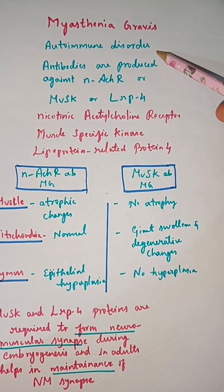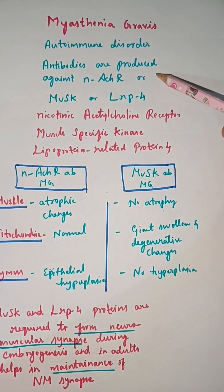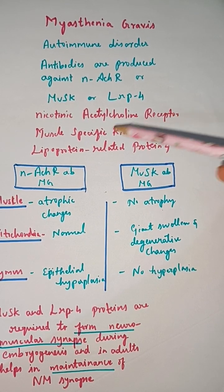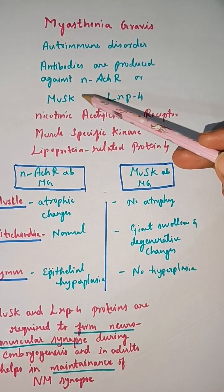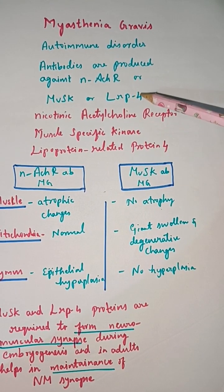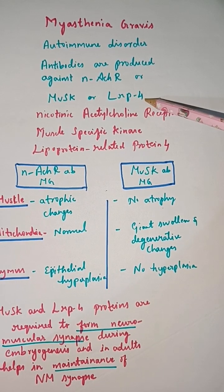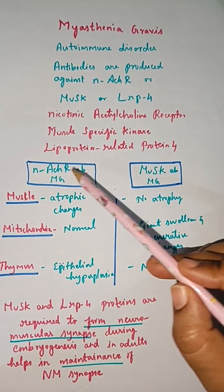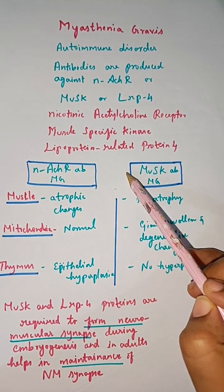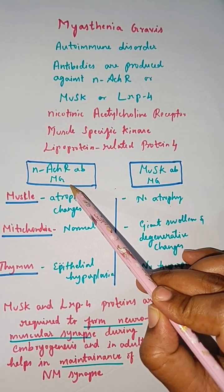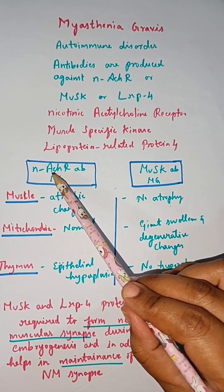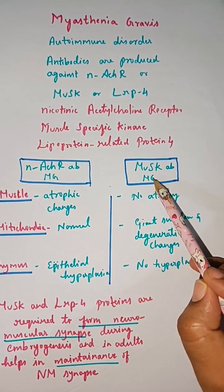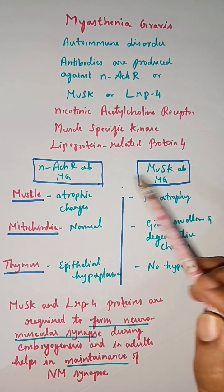Myasthenia gravis is an autoimmune disorder. Antibodies are produced against nicotinic acetylcholine receptor, muscle specific kinase, or lipoprotein related protein 4. Pathologically, based on the antibody production, myasthenia gravis can be broadly divided into acetylcholine receptor antibody myasthenia gravis or MuSK antibody myasthenia gravis.